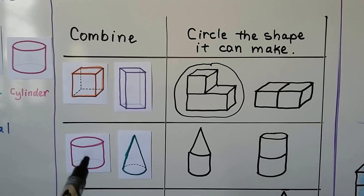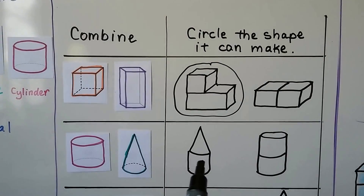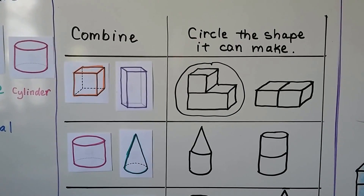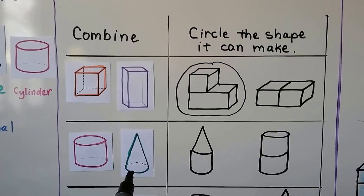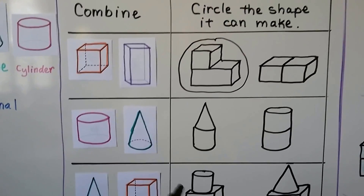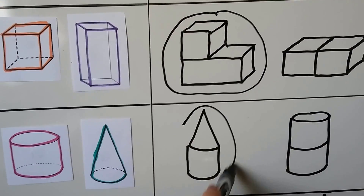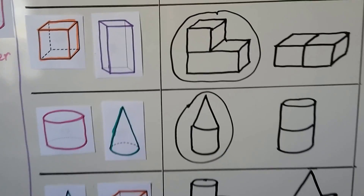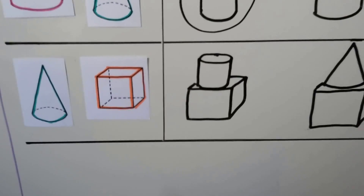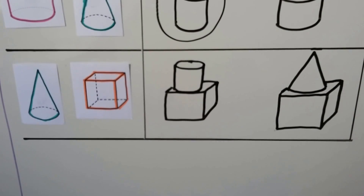If we combine this cylinder with this cone, will we make this shape or this shape? It needs to have a cone, and this one doesn't have a cone, so it must be this one — it has a cone and a cylinder. We can make that shape.